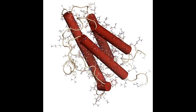Functions of RBCs: RBCs are mainly concerned with the transportation of oxygen and nutrients to the body cells and removal of waste. Hemoglobin can bind with both oxygen and carbon dioxide. In the lungs, oxygen molecules attach to hemoglobin. Hemoglobin then carries oxygen to the body tissues and cells through the blood vessels, and also collects carbon dioxide from the tissues and transports it to the lungs, where it is expelled from the body.